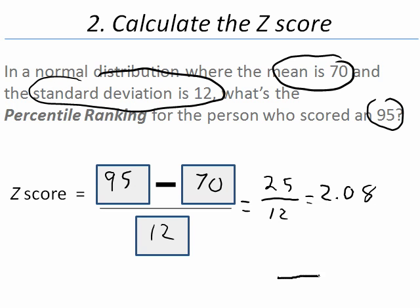What that lets us know is that the distance between the mean of 70 and our value of 95 is 2.08 standard deviations above the mean. Now we'll go to the z-table to find out the proportion of people between 70 and 95.